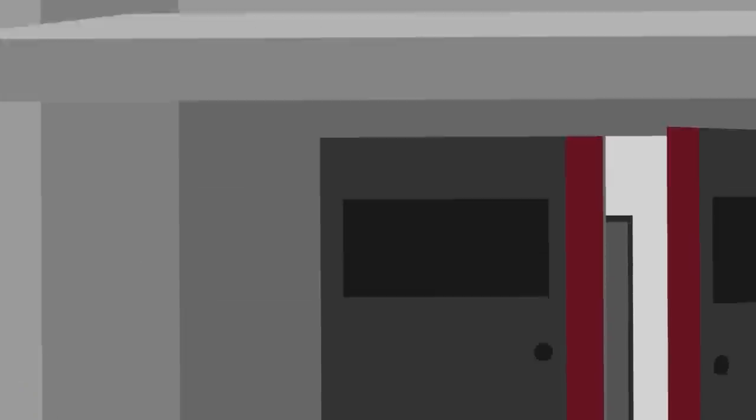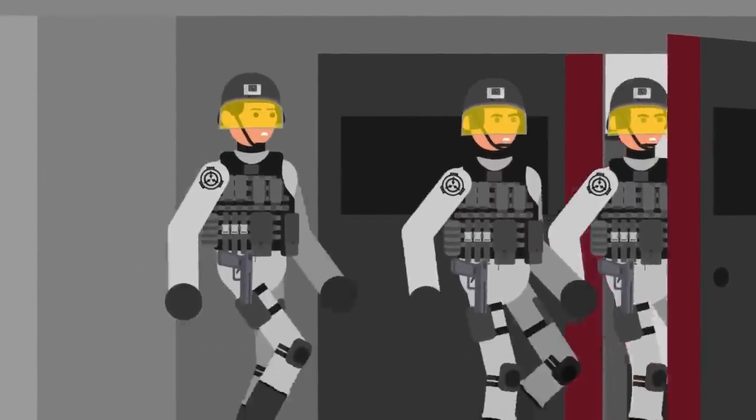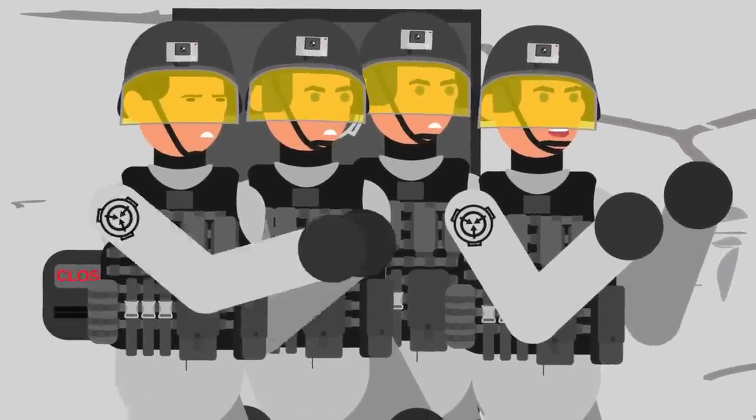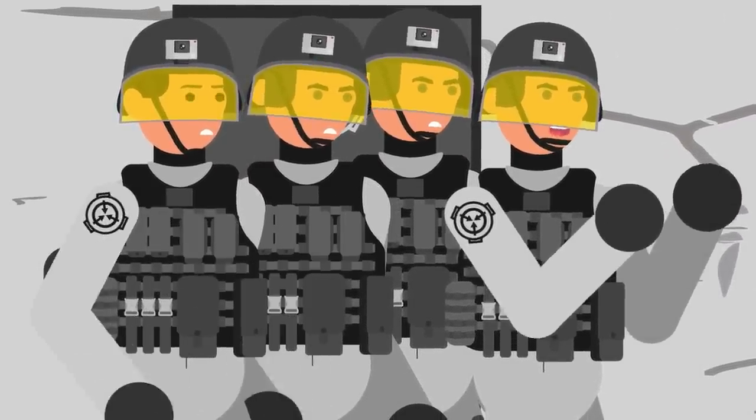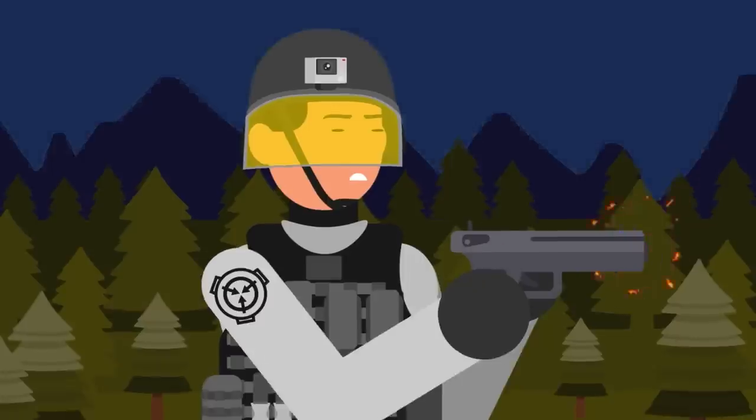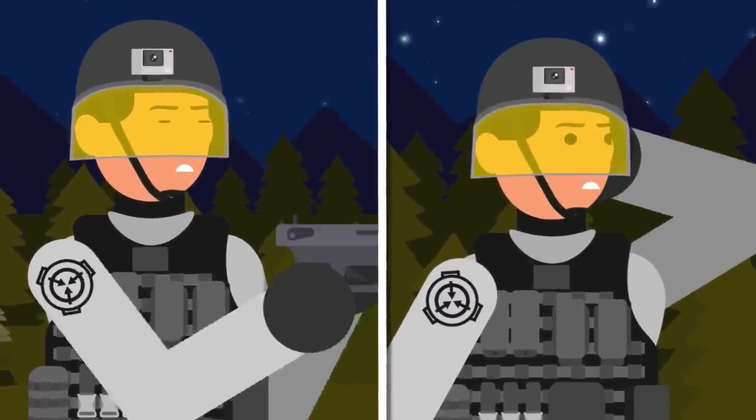When they returned to the facility, Simon and the other officers would all give the same story. They collectively led a third of the site's D-Class to an area out of surveillance range and executed them all with their handguns. At least, that's how they all remembered the incident. But what they thought they'd done didn't quite match what had actually happened.